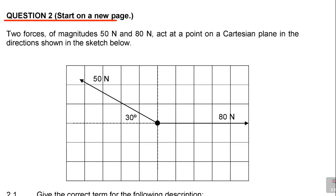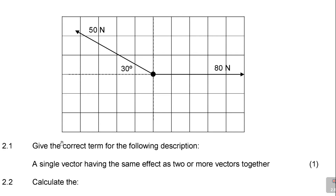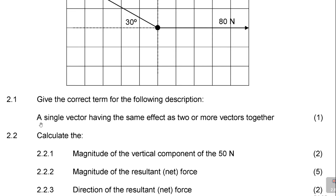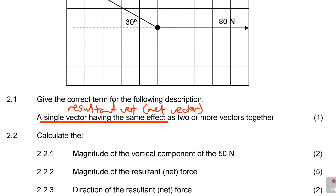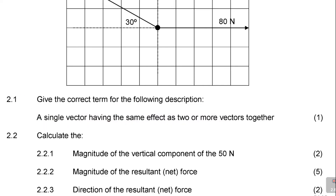Question number two says: two forces of magnitude 50 newtons and 80 newtons act at a point on a Cartesian plane in the directions shown in the sketch below. Then it says give the correct term for the following description. Question 2.1 says: a single vector having the same effect as two or more vectors together. So this single vector which has the same effect is called the resultant vector — or the net force. The keyword there is the resultant vector.